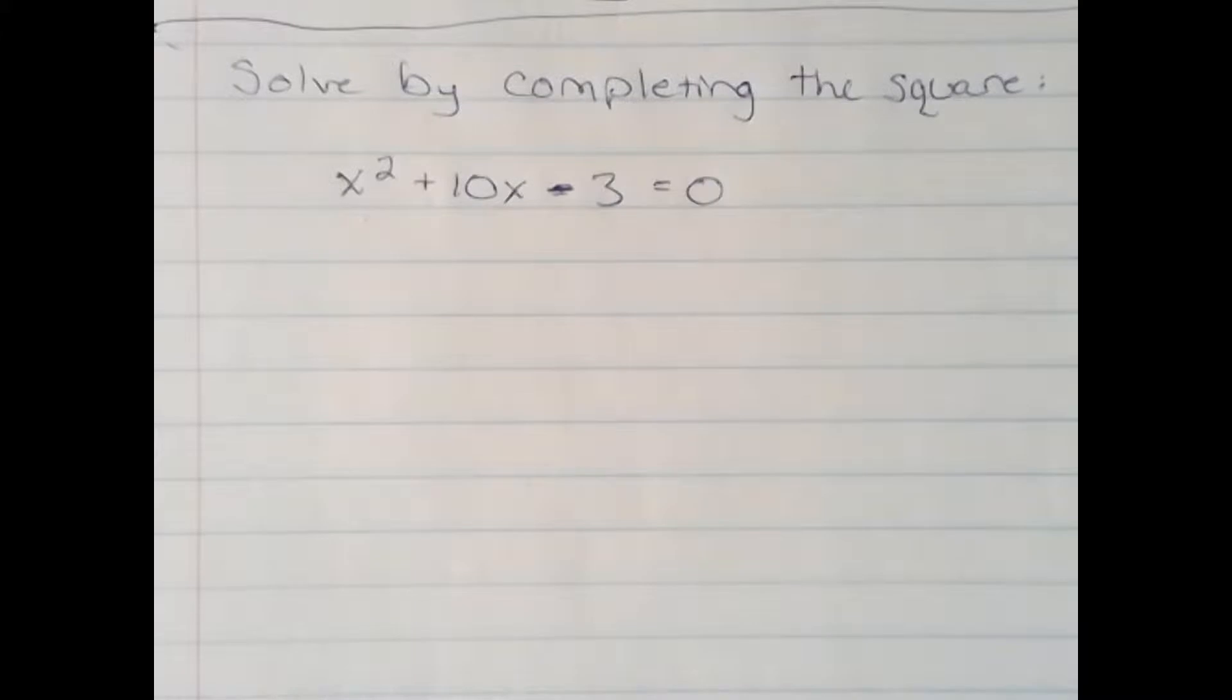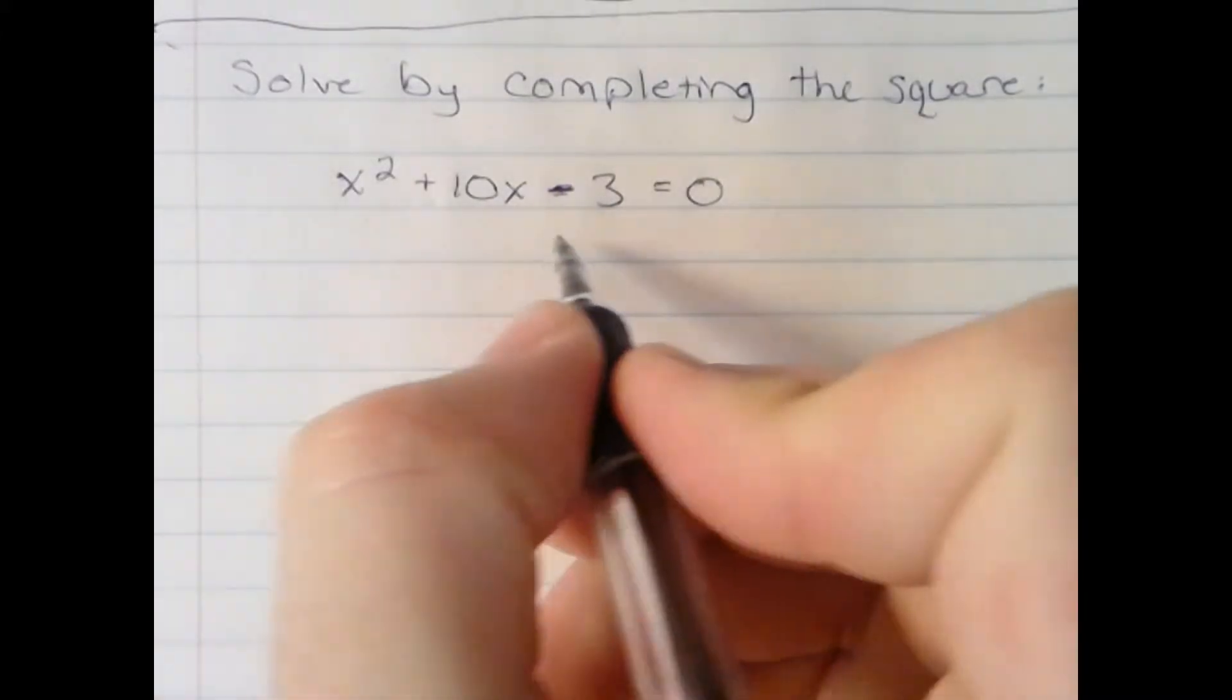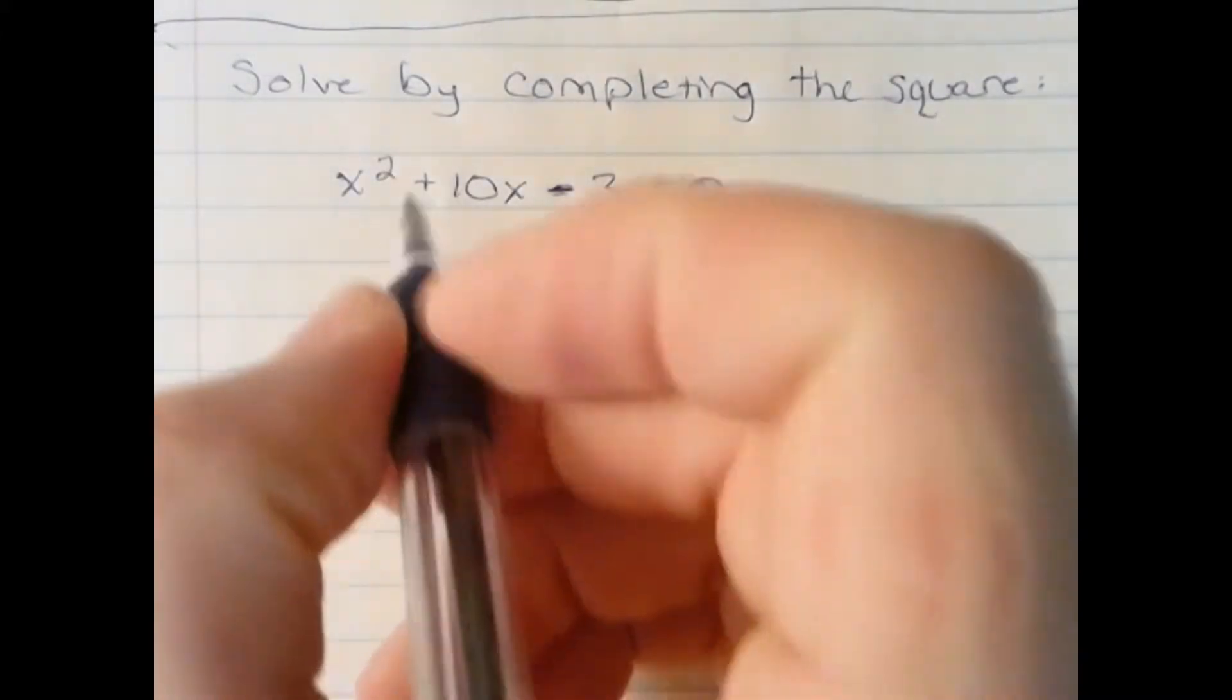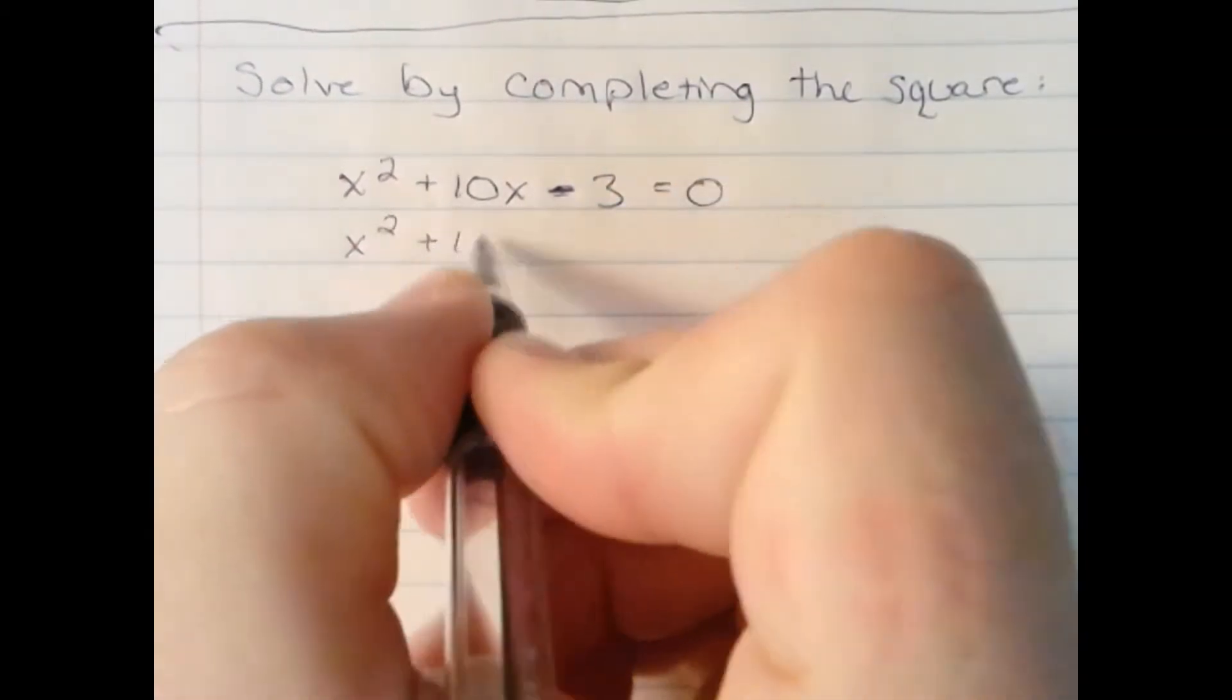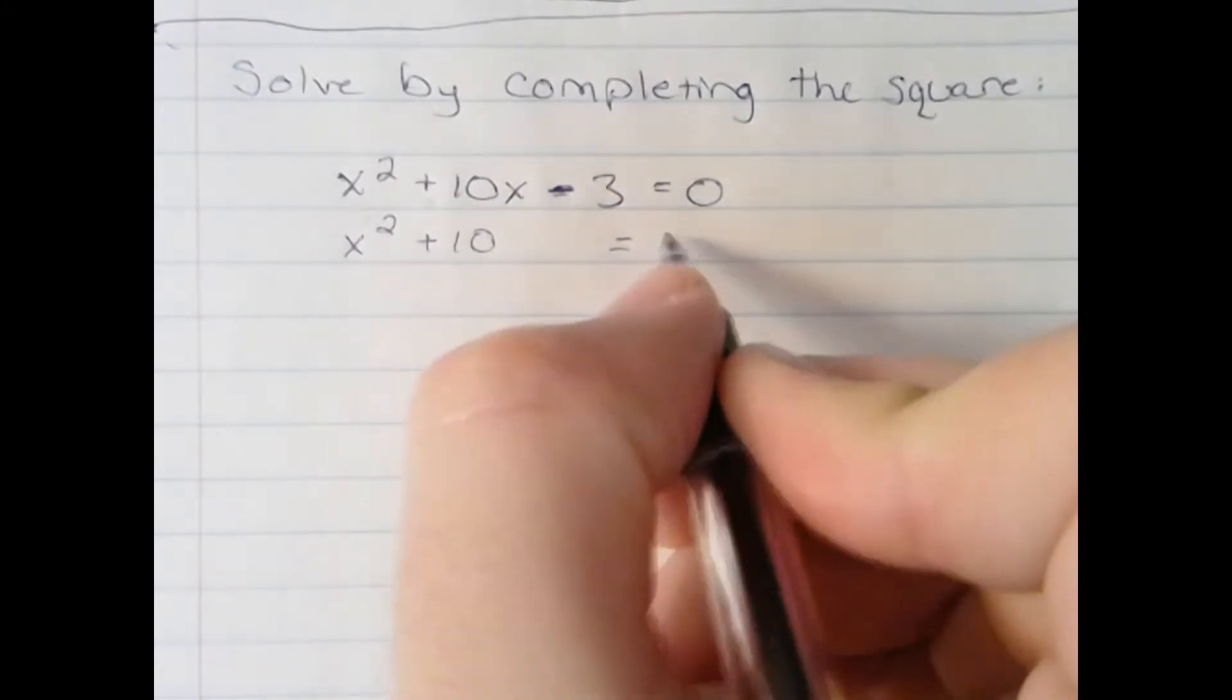And the process is fairly simple. First thing is we're going to get all of the x terms to one side by adding 3 to both sides. x squared plus 10x equals 3.